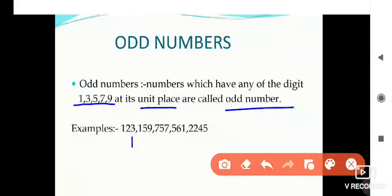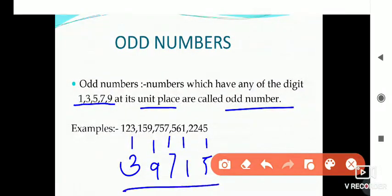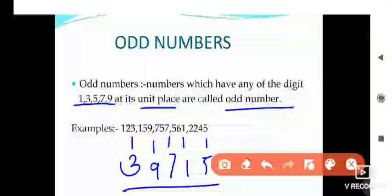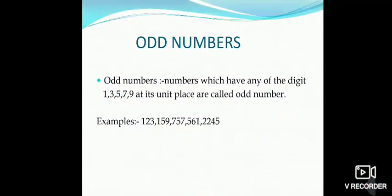Here are some examples — 3, 9, 7, 1, and 5. These numbers are present at the unit place, and these are the digits 1, 3, 5, 7, 9. That is why all these numbers are odd numbers.